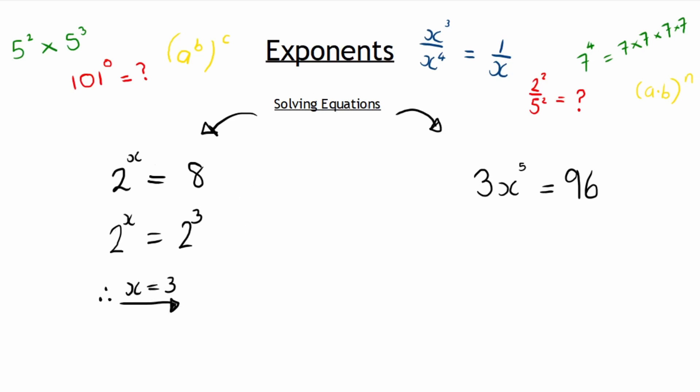And so let us look now at the second type of equation where the variable is in the base. And now we have 3 multiplied by x to the power of 5 equals to 96. And so here we have to do a multi-step process as we can see we can't really try and get the bases equal to each other as the base here on the left hand side is a variable.